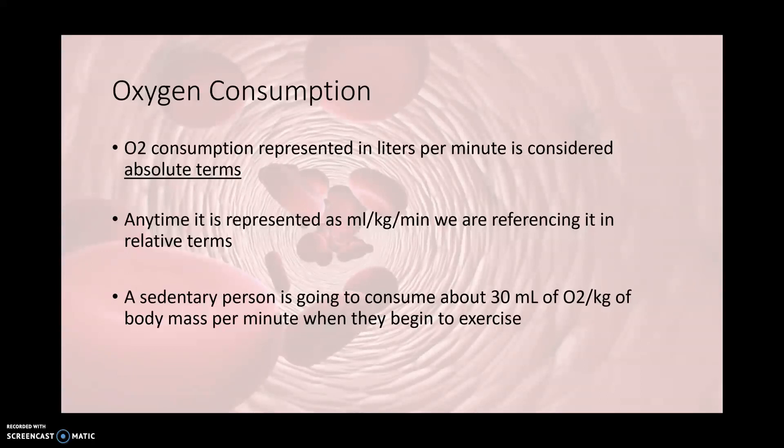The relative representation allows us to compare person to person because we are taking body mass in kilograms into consideration. A sedentary person is going to consume about 30 mLs of oxygen per kg of body mass per minute when they begin to exercise. They will also exercise at a low intensity and will hit that number fairly quickly.